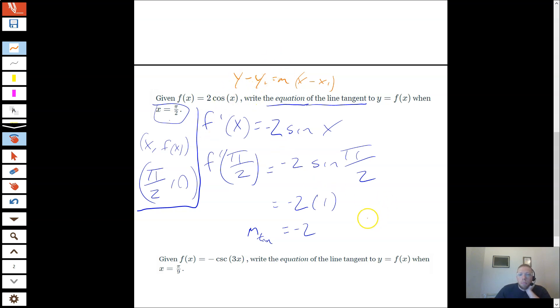So in this case, my final equation, I could write it as y minus 0 equals negative 2 times (x minus π/2). So in this case, solving for b wouldn't actually be that hard. But this is obviously easier. So I just wrote it down like that.